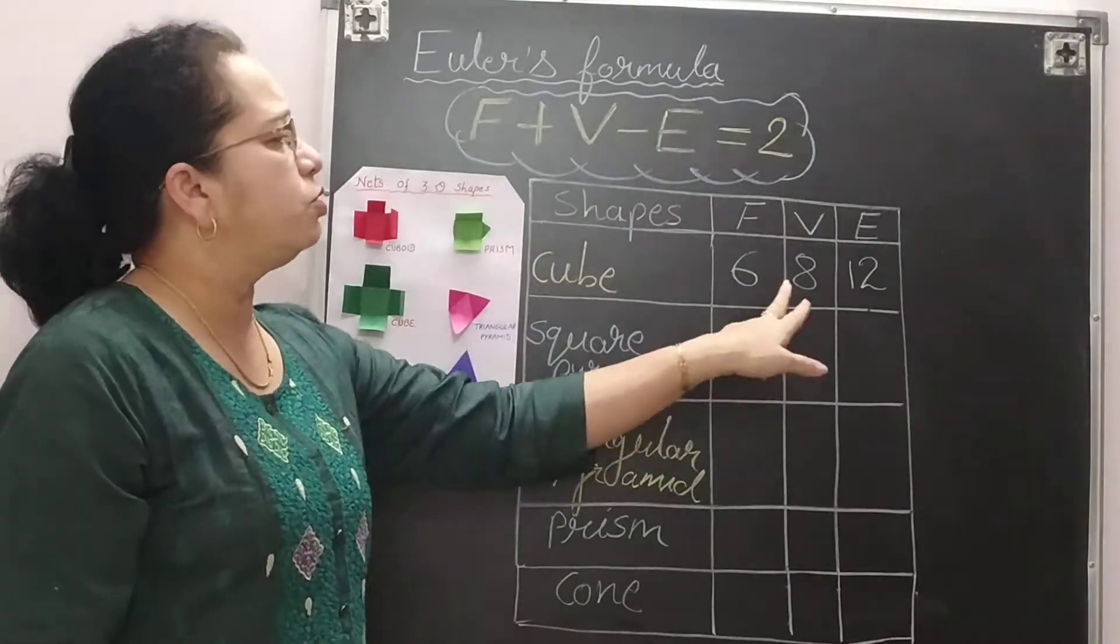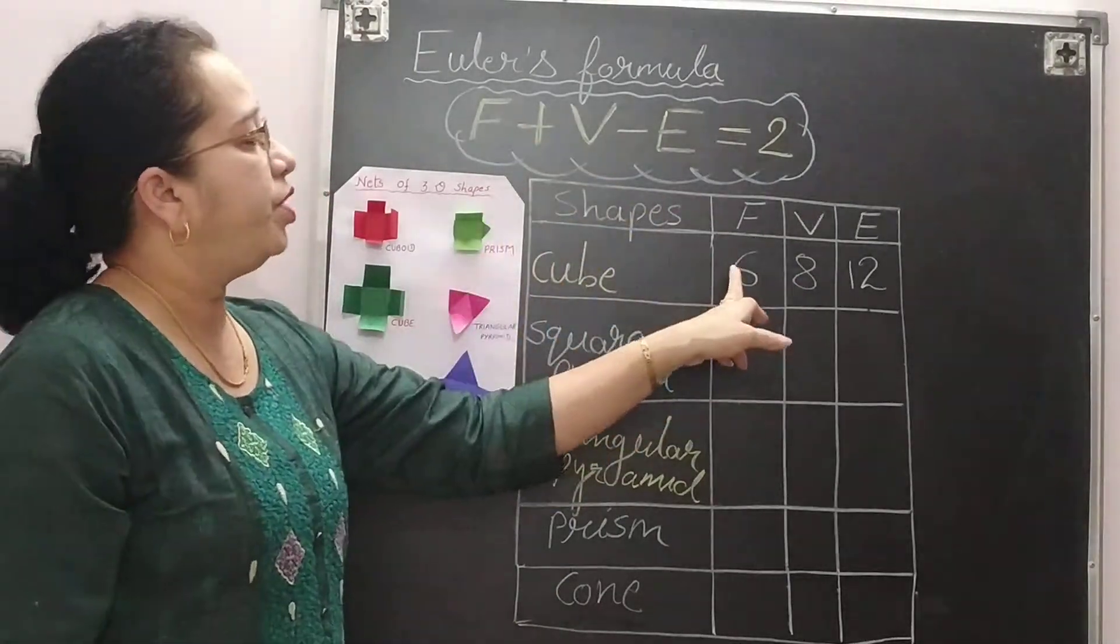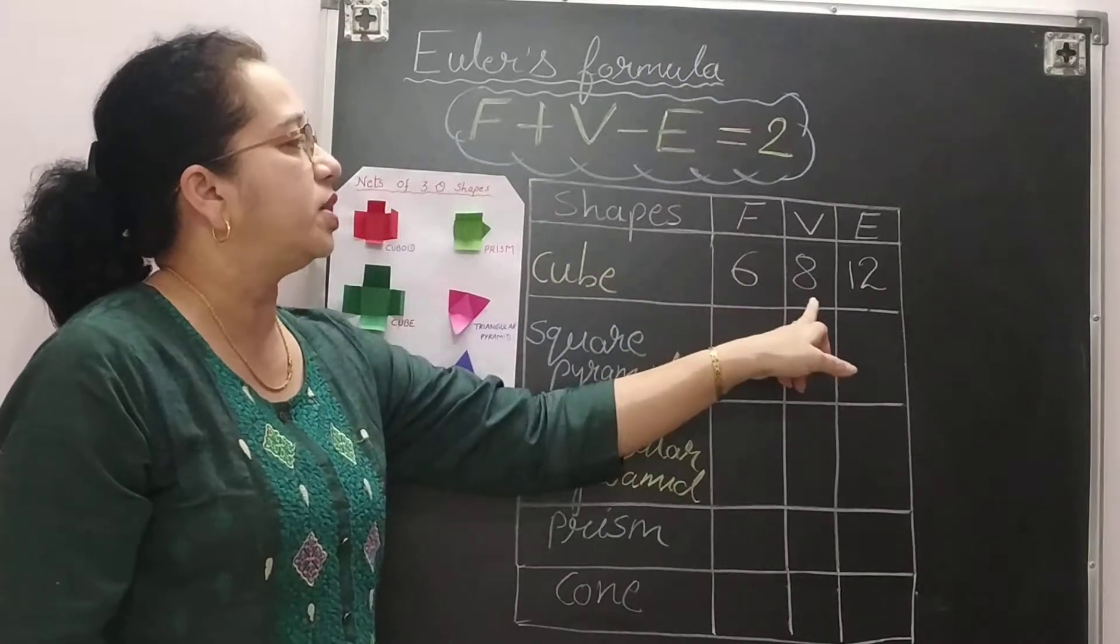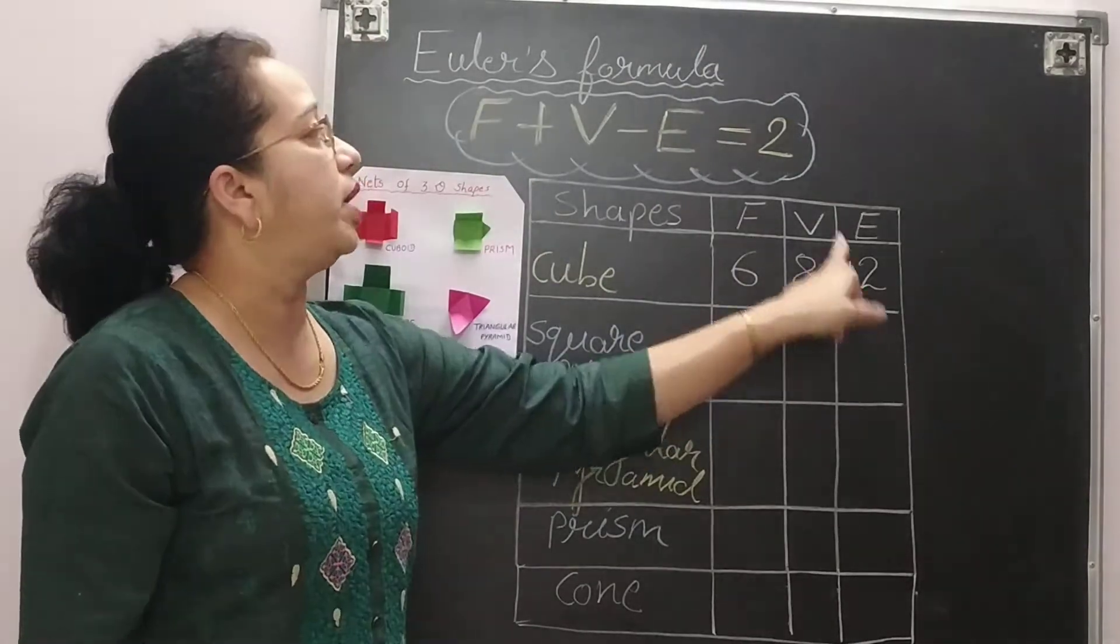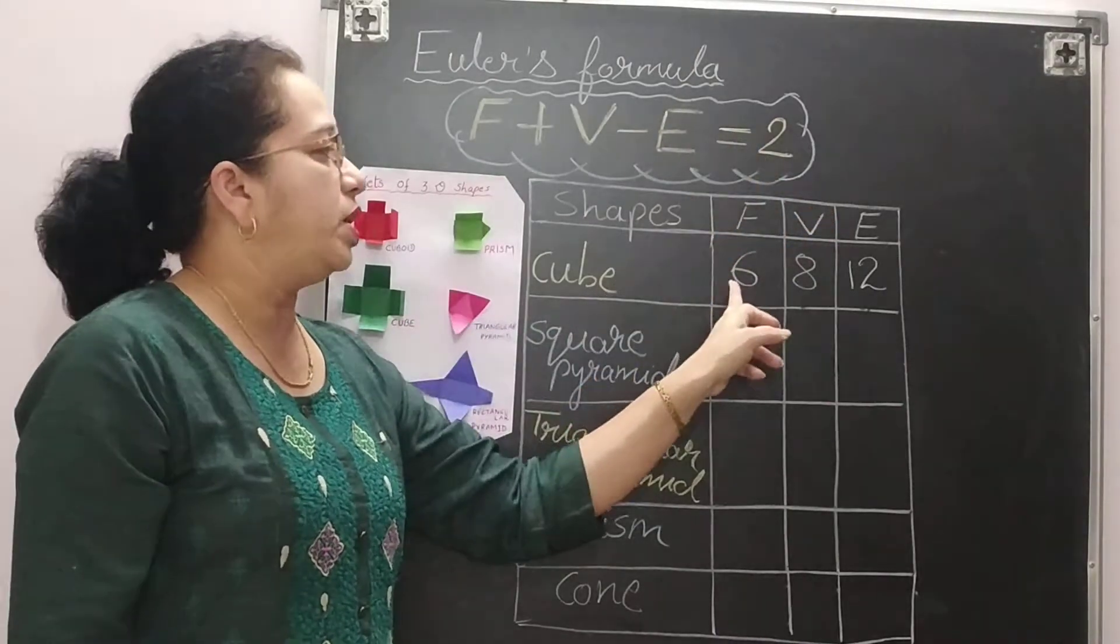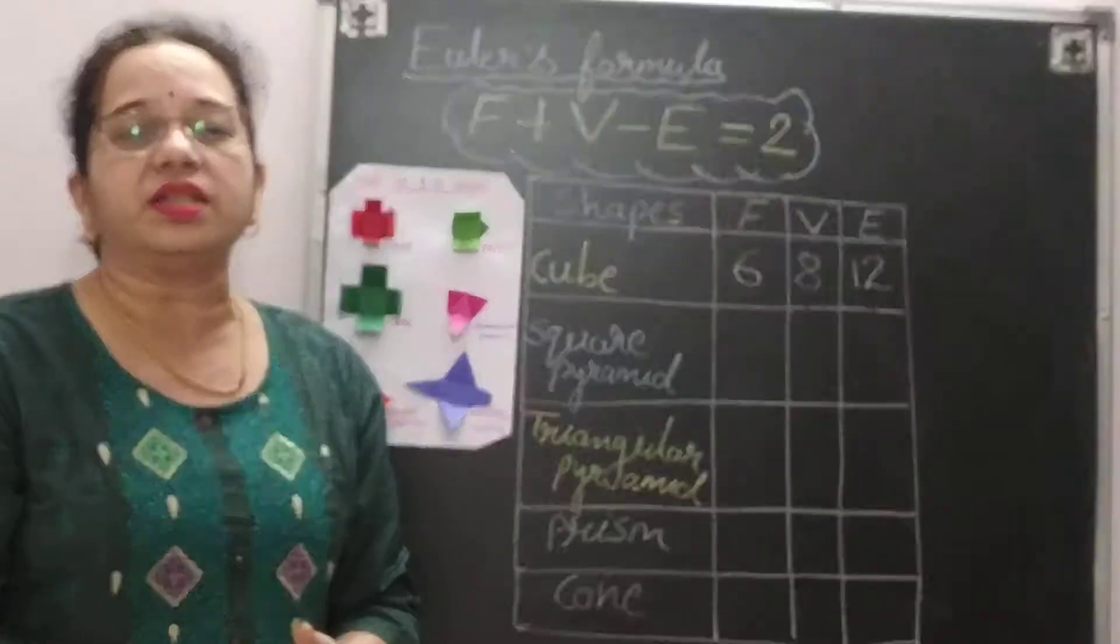Now substitute this value here. We need to add, so 8 plus 6 plus 8 will give you 14. Wait, 6 plus 8 will give you 14. 14 minus 12 will give you 2. It means the things you have counted is correct.